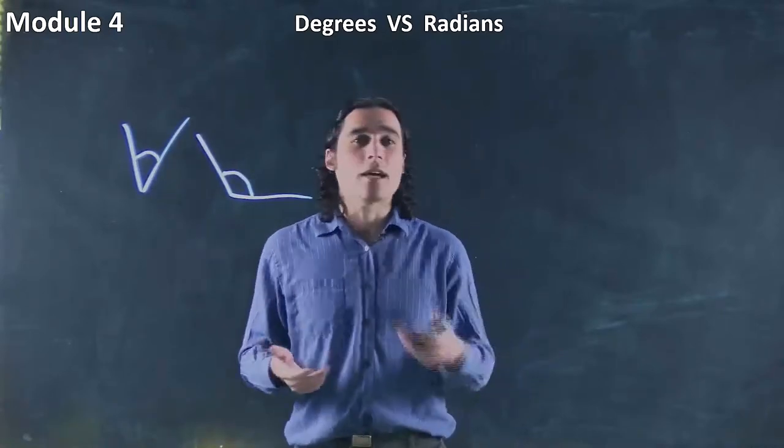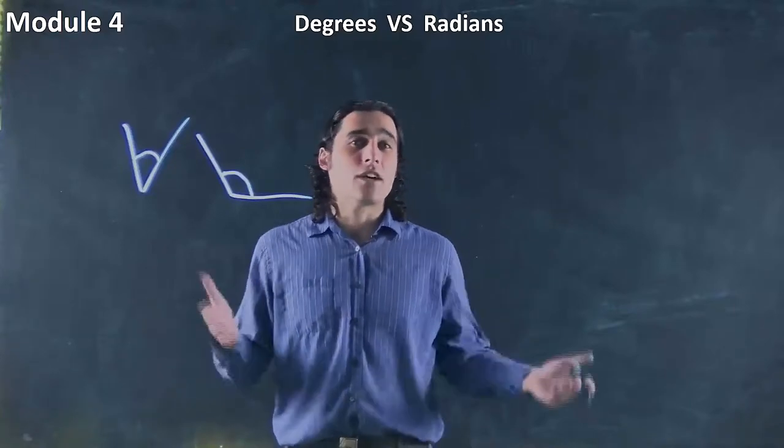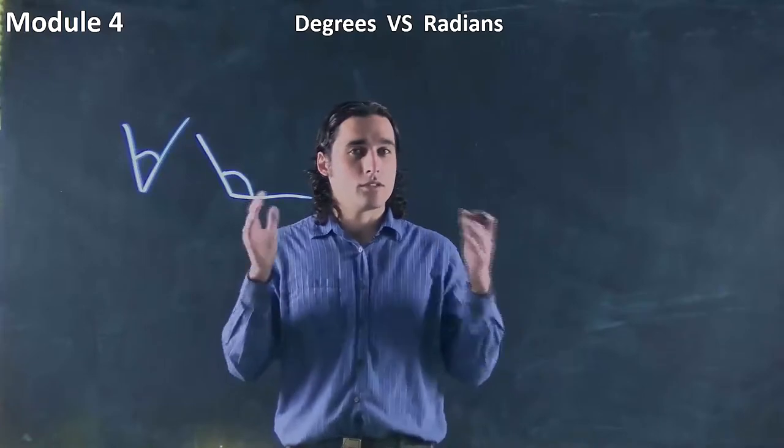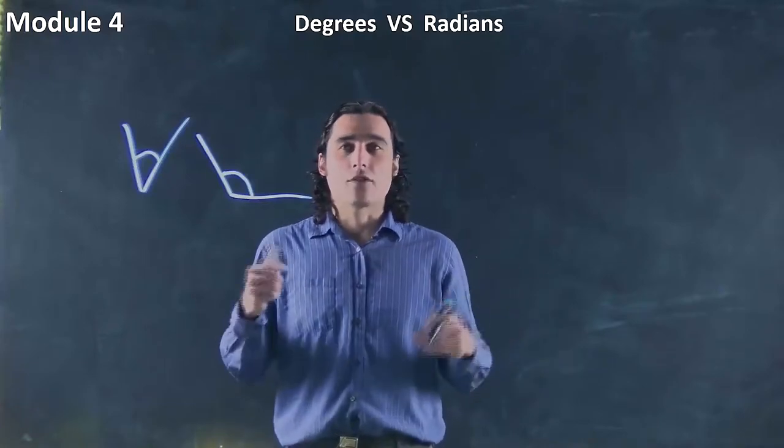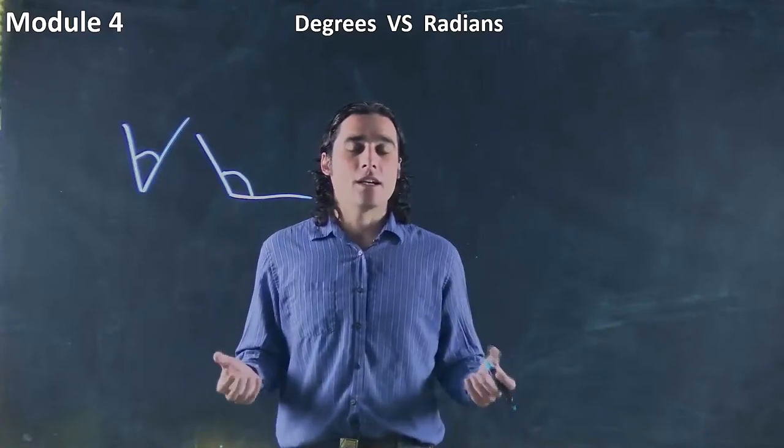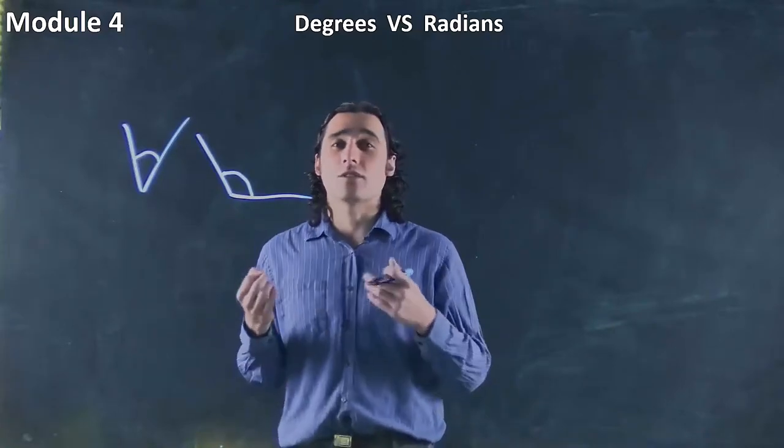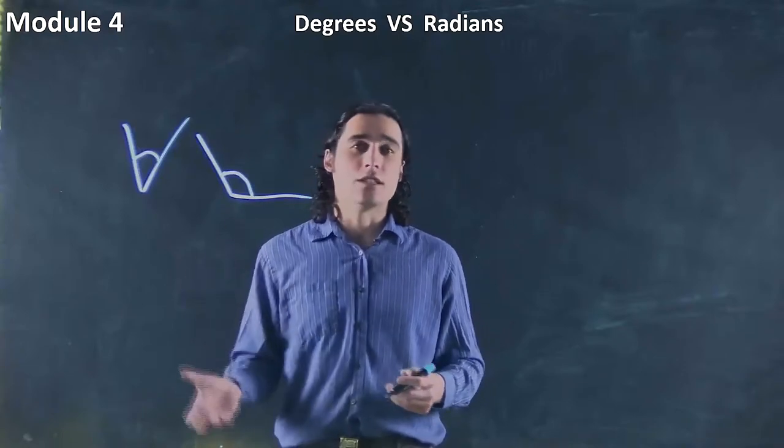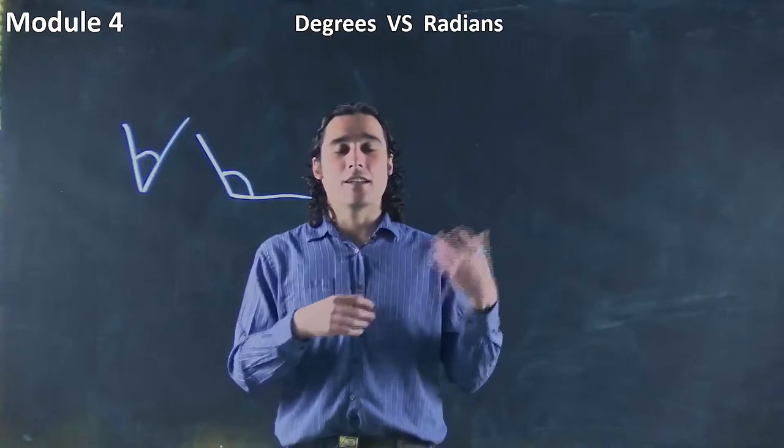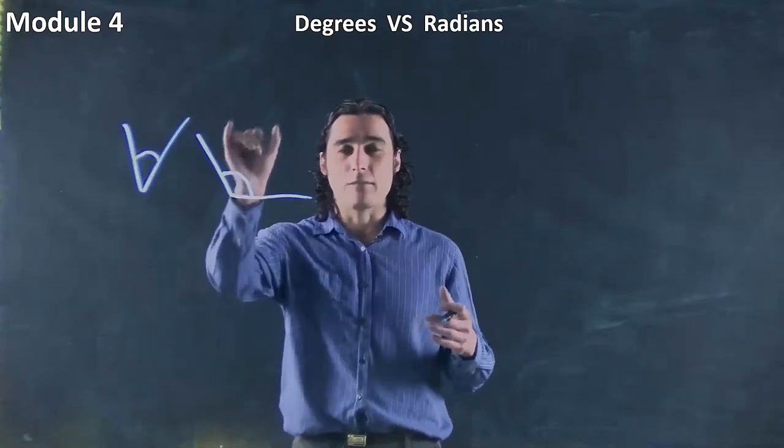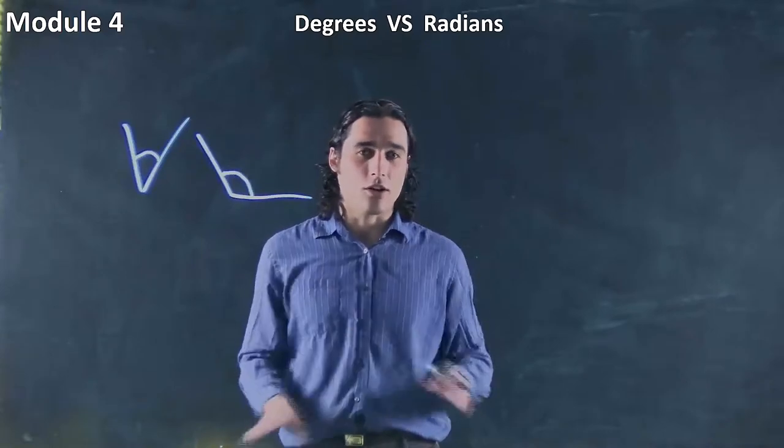In fact, think of it similar to temperature. We talk about Celsius and Fahrenheit. They both describe a temperature, just two different units. Same thing if you're talking about mass, you can talk about something being kilograms or pounds. It's just different ways of measuring the same thing, and it depends on what you're doing. Sometimes radians are useful, sometimes degrees are useful, and we're going to see in later videos you can convert between them anyway. They're just two ways of measuring an angle. That's all they are.